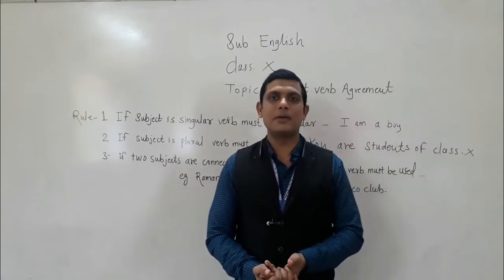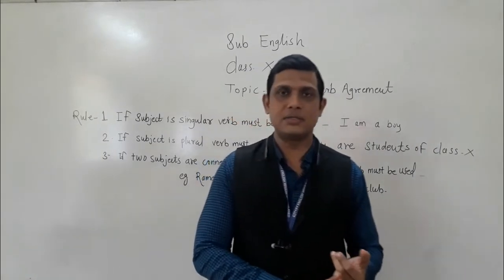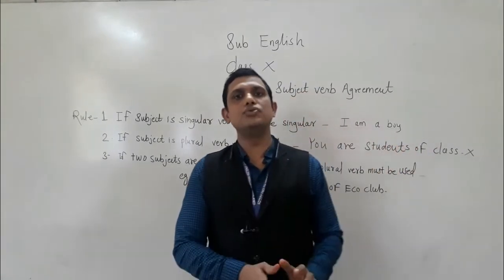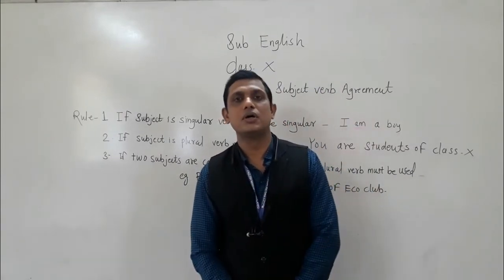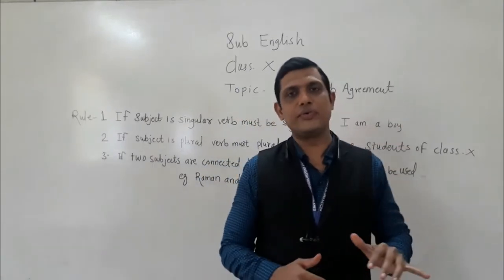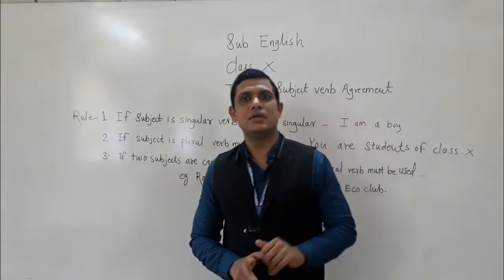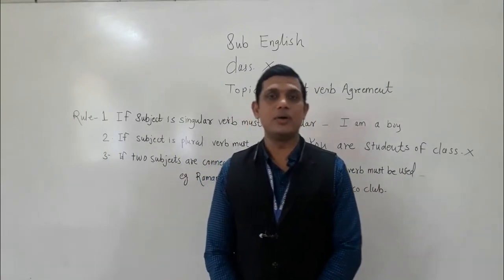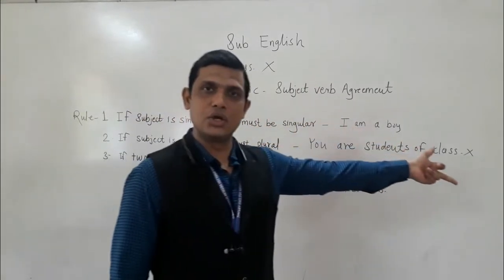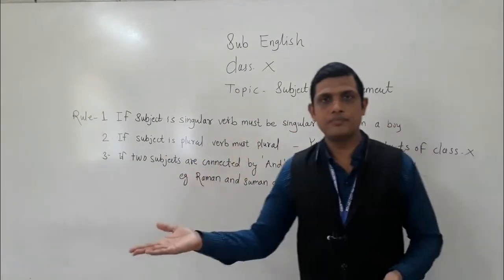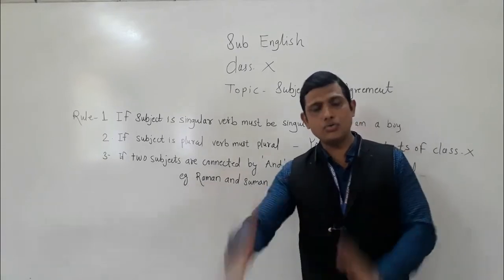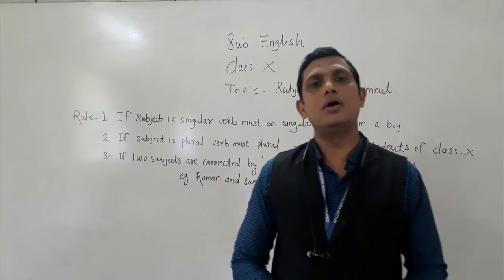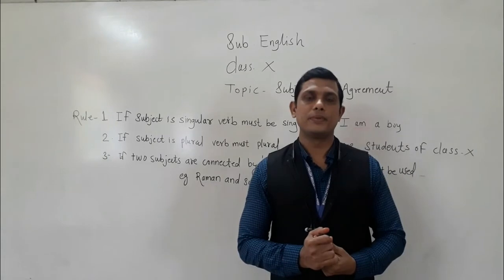And the last rule: some subjects look like plural but are actually singular — like physics, mathematics, electronics. These nouns look like plural but are singular, so we have to use a singular verb. The basic principle behind all these rules is: if the subject is singular, we use a singular verb; if the subject is plural, we use a plural verb. Subject must agree with the verb — then only can we make a meaningful sentence.